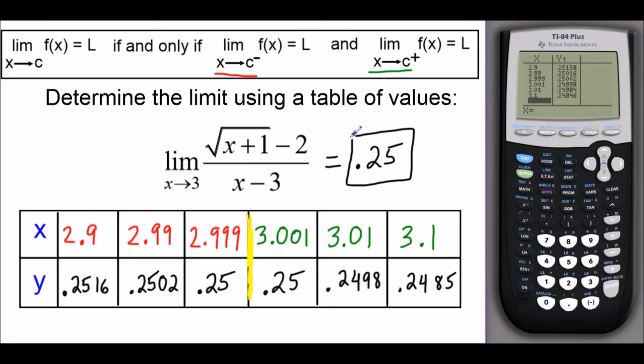So just one tip with these particular problems: be very careful. You have to make sure that when you make a table you pick values to the left and the right of 3. Because in some cases, your left limit and your right limits could be different, and when that happens, your limit does not exist. But in this case, our left and right limit wound up to be the same thing, so our limit is 0.25.